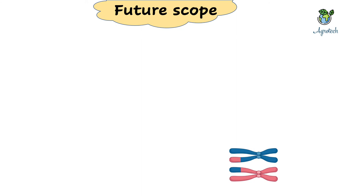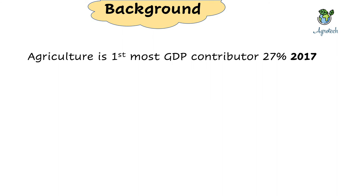Finally, let me discuss the future scope of biotechnology in Nepal. First, some background on why we need biotechnology in Nepal's agriculture. Agriculture is the primary GDP contributor at 27 percent according to Central Bureau of Statistics 2017 data. If we effectively develop the biotech industry, we could potentially move GDP contribution from 27 percent to 50 or even 80 percent, making Nepal one of the sustainable and economically important agricultural systems.